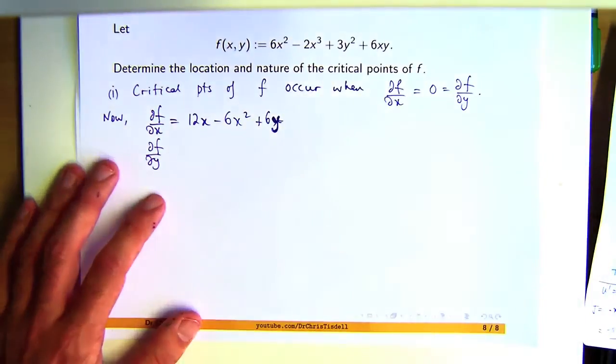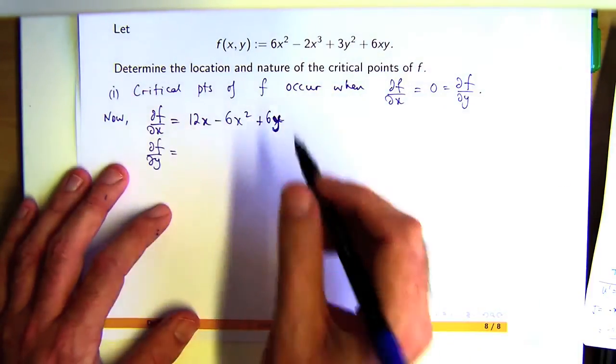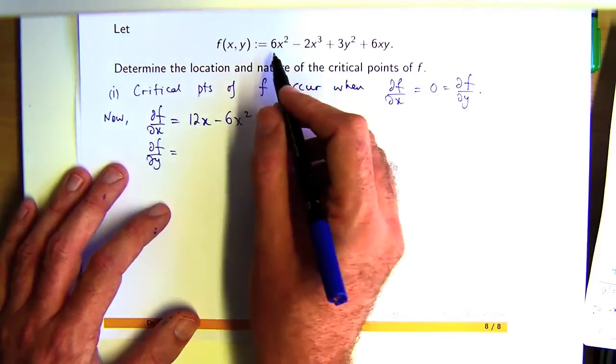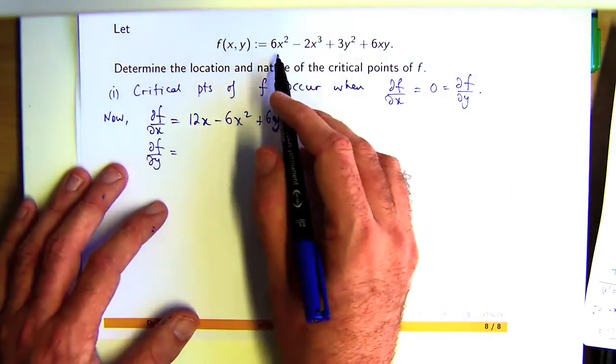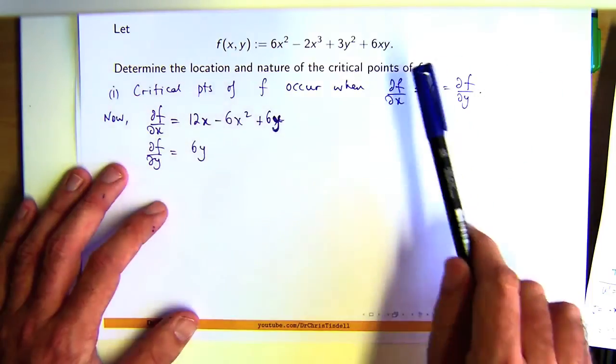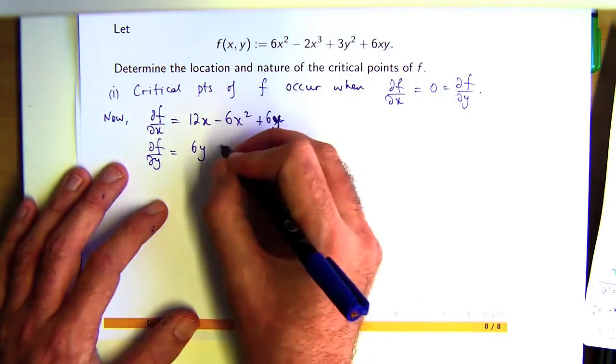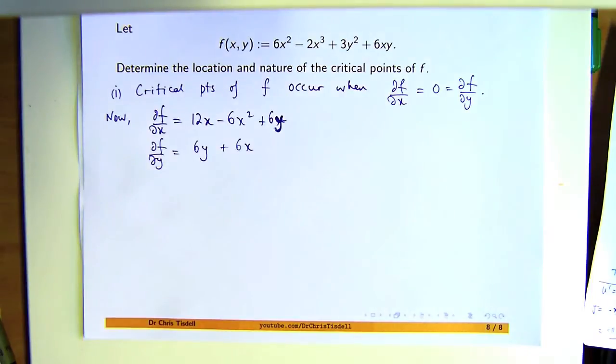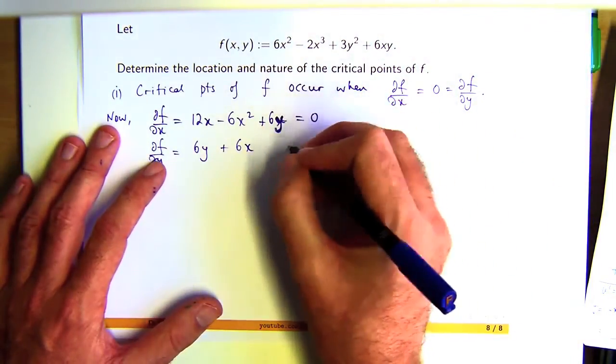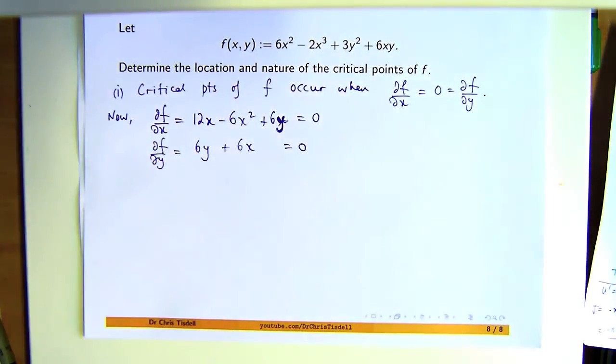6y, because we're making x a constant. So let's differentiate now. Hold all the x's constant and differentiate with respect to y. That's going to be 0, that's going to be 0, that's going to be 6y, and this is going to be 6x. So let's set these equal to 0 and then we can solve them.